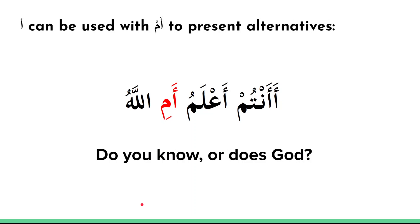Also, the alif can be combined with am later in the sentence to present alternatives. For example, a-antum a'lamuu means 'do you know?' and am-in-Allahu means 'or does God know?' — so 'do you know or does God know?' Allah here is in the marfu' case as the subject. The word am is used to present alternatives and is usually translated as 'or.'